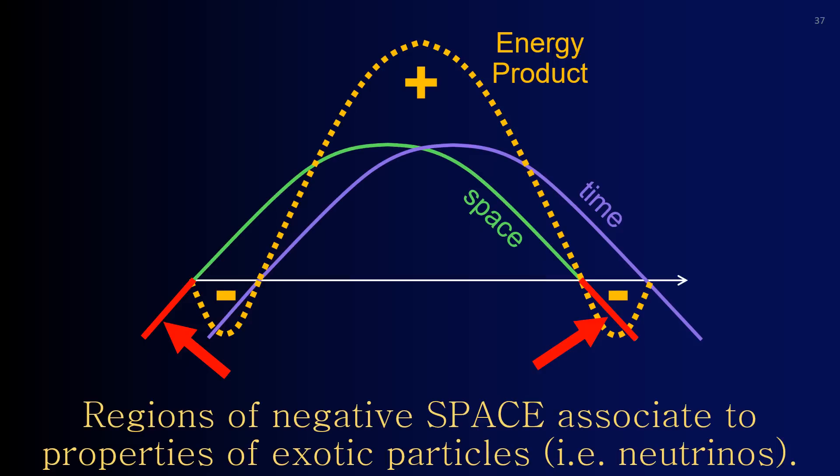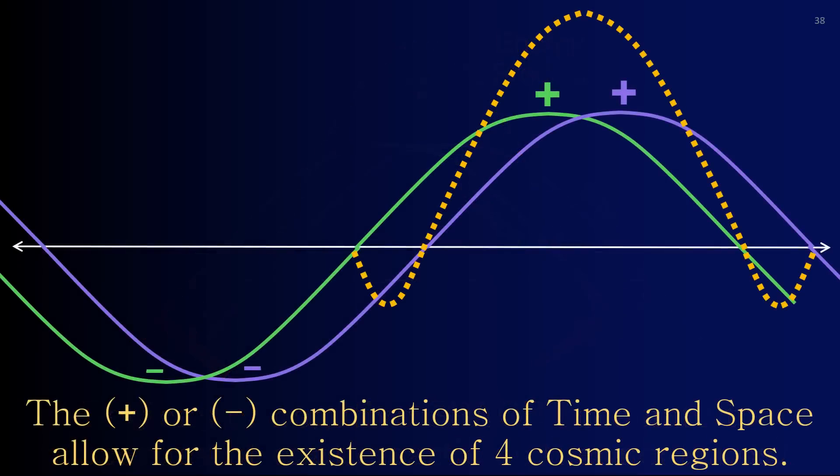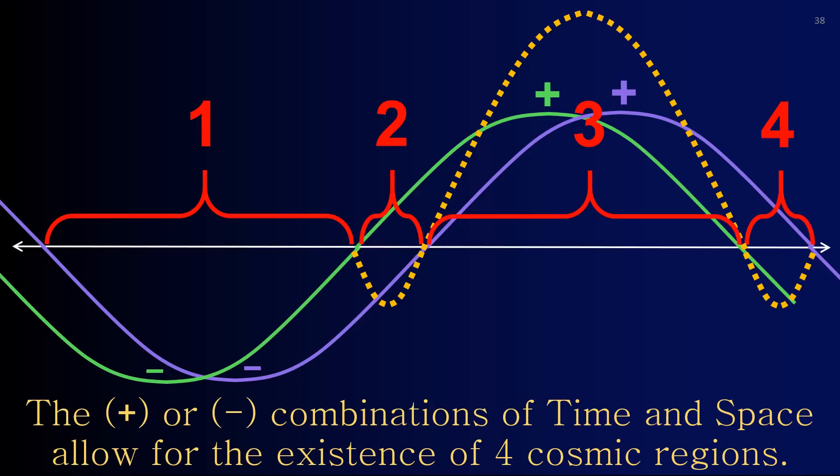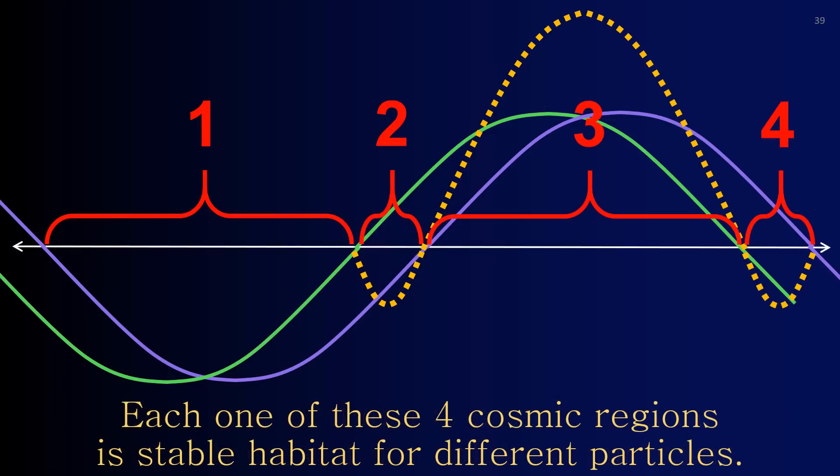Regions of negative space associate to properties of exotic particles, like neutrinos. The positive or negative combinations allow for the existence of four cosmic regions. Each one of these four cosmic regions is stable habitat for different particles.